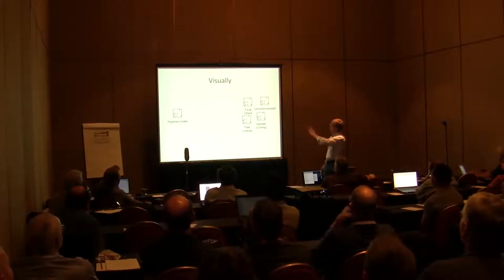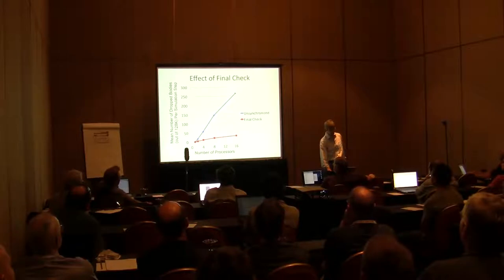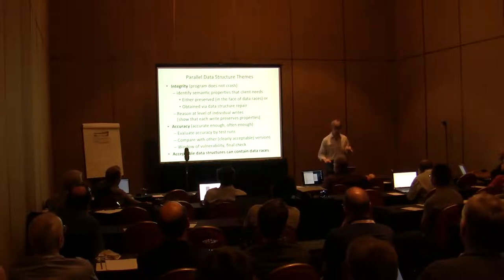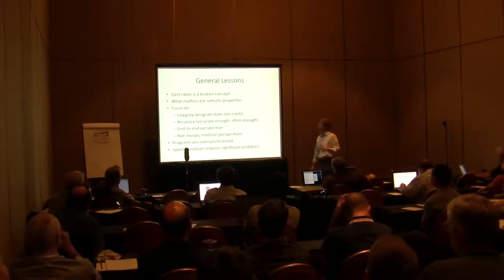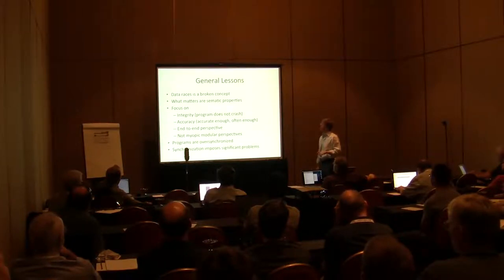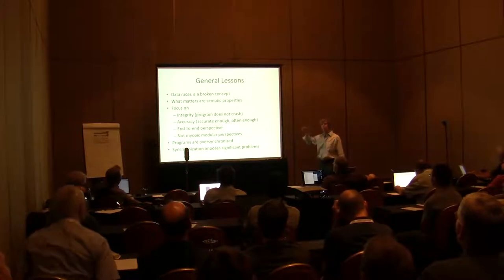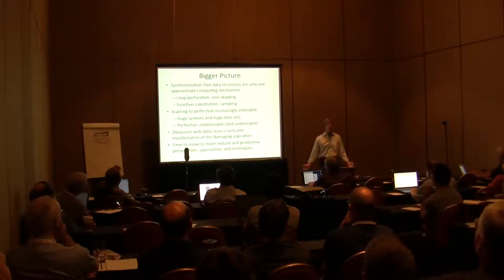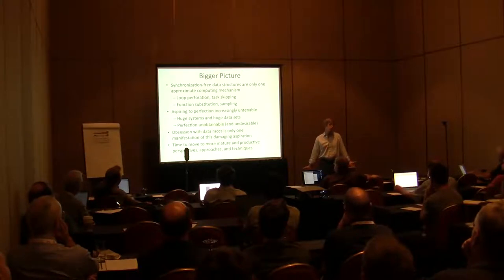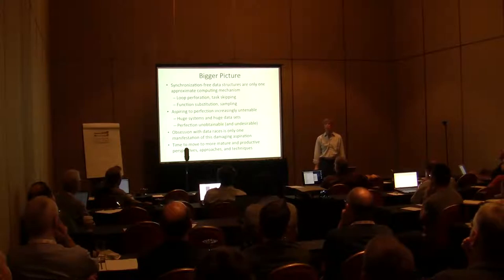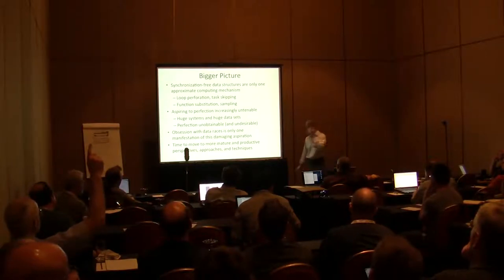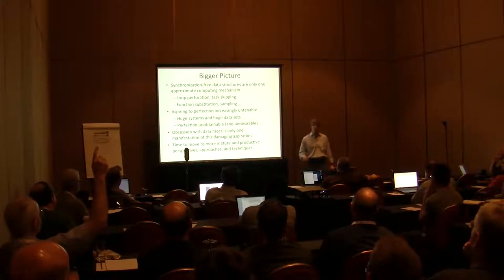Visually, the hyper-accurate version is over here, and all other versions are clustered together — two orders of magnitude difference. The final check does have an effect on accuracy but we don't need it. Parallel data structure themes: make sure you get the integrity, make sure you get the accuracy — acceptable data structures can contain data races. General lessons: the concept of data races as a program-level concept is over-emphasized. What really matters are the semantic properties. The result of the data race dogma is that programs are over-synchronized and synchronization is imposing bigger problems. Synchronization-free data structures are only one approximate computing mechanism. Aspiring to perfection is increasingly untenable with huge systems and huge data sets, and the obsession with data races is only one manifestation of this damaging aspiration for perfection.